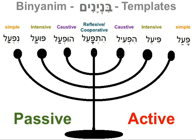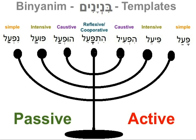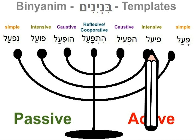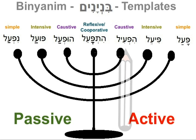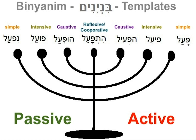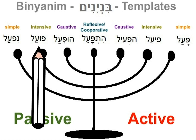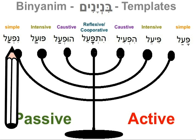Here are the Binyanim. Pa'al: simple action, active voice. Piel: intensive action, active voice. Hif'il: causative action, active voice. Hitpa'el: reflexive and cooperative action. Huf'al: causal action, passive voice. Pu'al: intensive action, passive voice. Nif'al: simple action, passive voice.